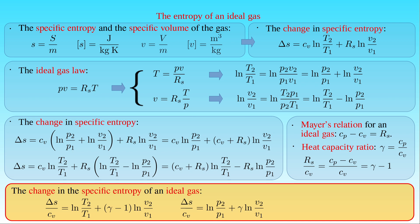Finally, if the transformation consists of an isobaric process and an isothermal process, ΔS over C_V is given by gamma times the natural logarithm of T2 over T1, plus (1 minus gamma) times the natural logarithm of P2 over P1.